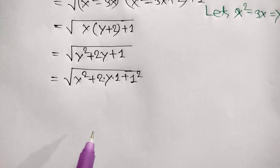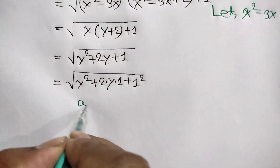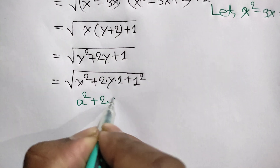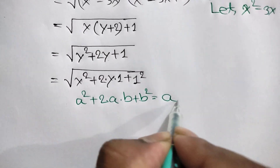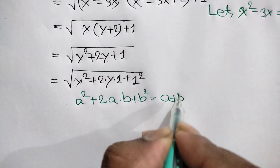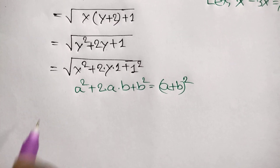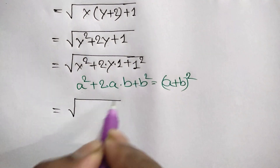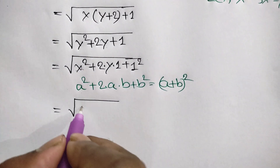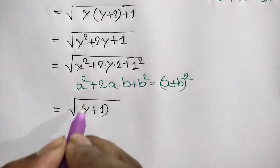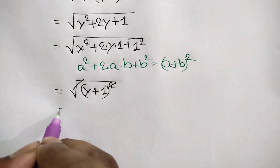y squared plus 2y plus 1 can be written as y squared plus 2 times y times 1 plus 1 squared. We know that a squared plus 2ab plus b squared equals (a plus b) squared. Applying this algebraic formula, we get the square root of (y plus 1) squared, which equals y plus 1.